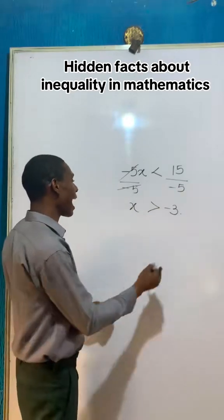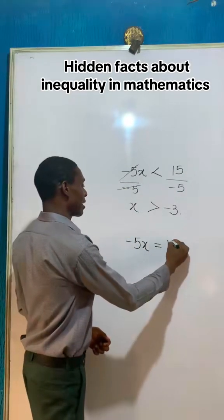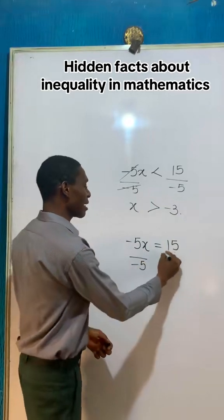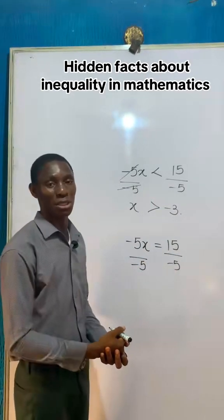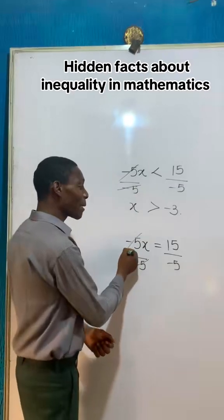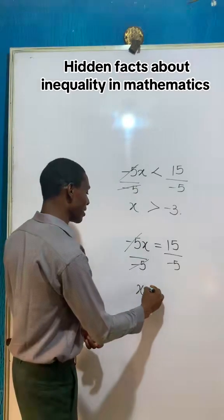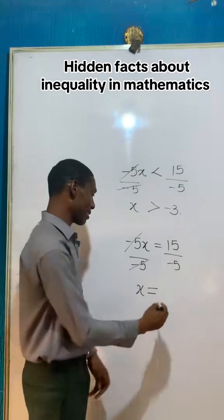And I said, it's the same thing if I had minus 5x equals 15. Now if I divided both sides by minus 5, the equal sign will change because they are used to this. But the problem is that whenever the equal sign changes, it remains the same, because whenever you turn the equal sign, it will remain the same.